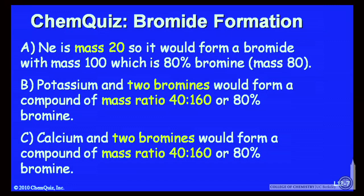Let's look at possible arguments for all the answers. For A, neon is mass 20, so it would form a bromide with mass 100, which would be 80% bromine. B, potassium and two bromines would form a compound with mass ratios 40 to 160, or 80% bromine.